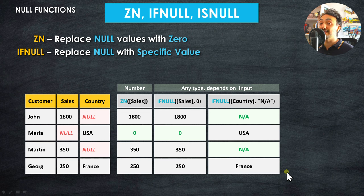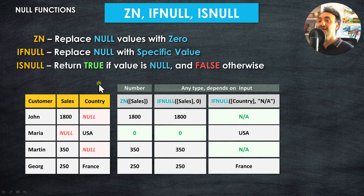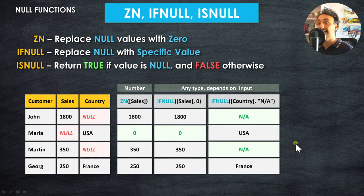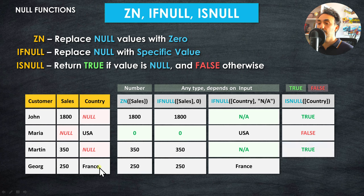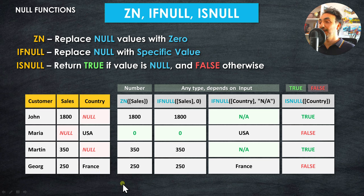Now for the third function: ISNULL. Sometimes we want to check whether a field has null values without taking any action yet. ISNULL returns true if the value is null and false otherwise. The output data type is boolean — only true or false. The syntax accepts one argument, and for each customer it tells us whether that field is null or not.